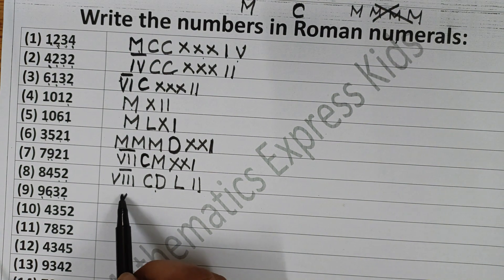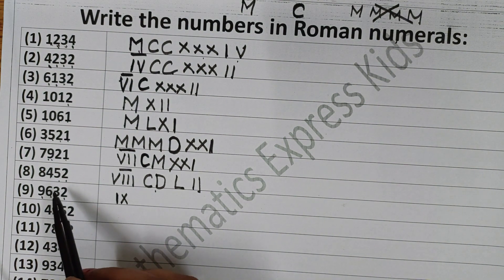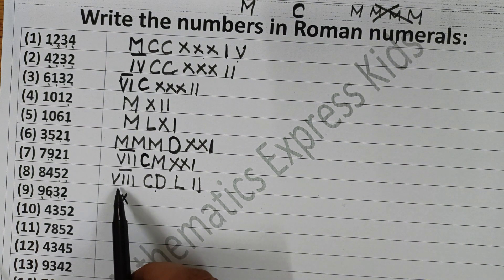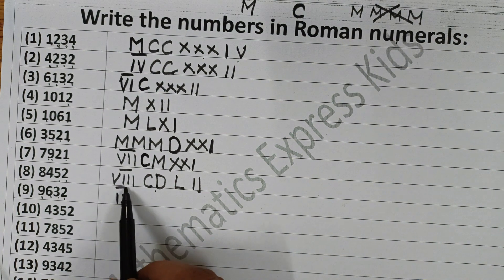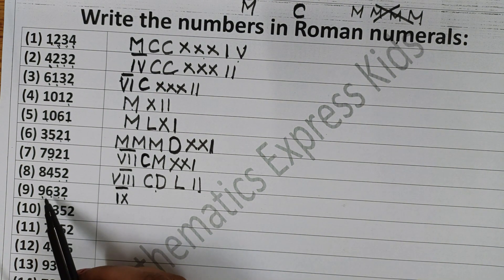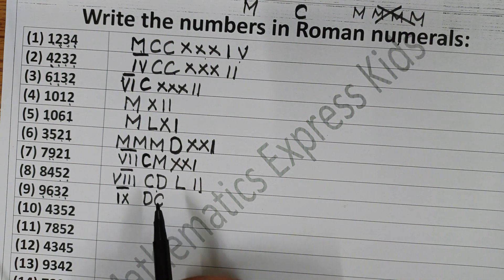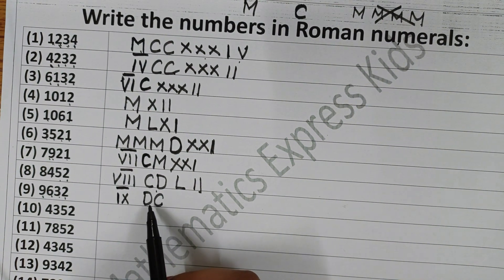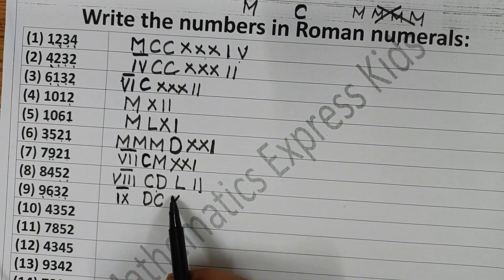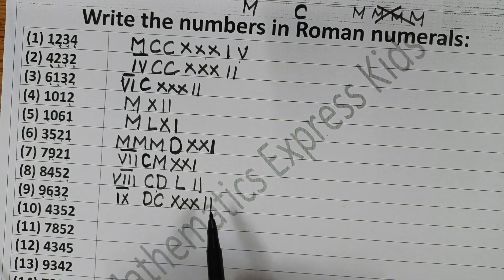Now the next one is 9632. How do you write 9000? Write 10 and subtract 1 from it — that is IX — so write IX with a bar over it for 9000. For 600: write 500 and then add 100 to it — DC — that is 600. Then 30 is XXX and 2 is II. So 9632 is IX-bar DCXXXII.